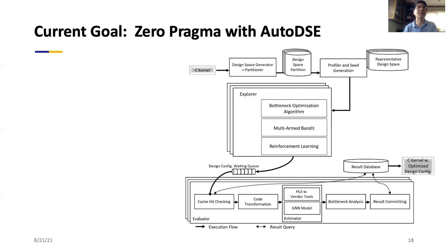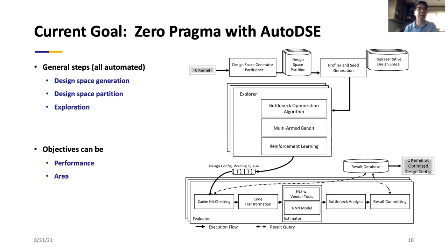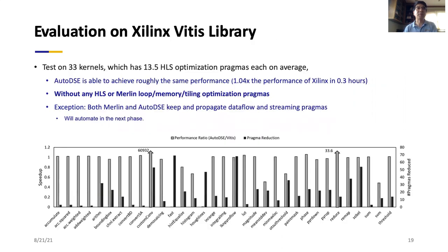Our current research is to remove the last one or two pragmas — automatically searching where to parallelize and pipeline. This involves defining the design space, pruning that space, and doing design space exploration with objectives of performance, area, or a combination. With our initial results from AutoDSE, we can completely get rid of the remaining Merlin pragmas on these open-source examples with comparable or slightly better performance.